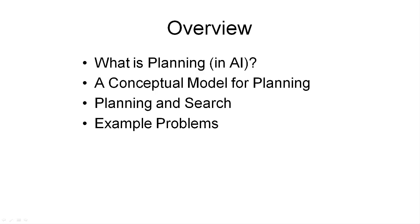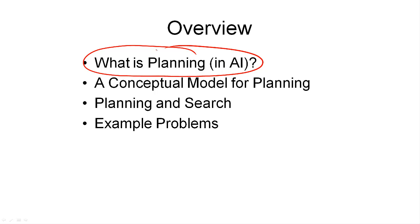The first question I have to answer is: what is planning? And more specifically, what do we mean by planning in the context of artificial intelligence? I will answer this question by informally describing the planning problem — the problem we are trying to solve in this field. I will then argue why this problem is important for AI as a whole, and then continue to describe some techniques that will be used to solve this problem.